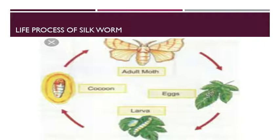The cocoon is made of a fiber which changes into silk upon exposure to air. When the cocoon is exposed to air, the fiber is changed into silk form.